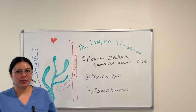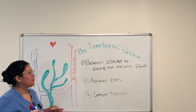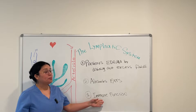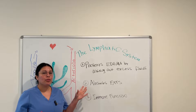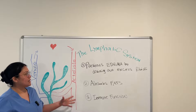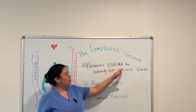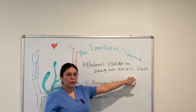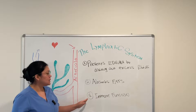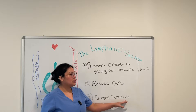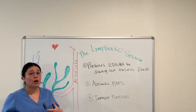Hey everyone, welcome. Today we're going to be reviewing the lymphatic system. Most people know the lymphatic system to be part of the immune system and have immune functions. However, there are three main functions: the first is it prevents edema by draining out excess fluids; the second is it absorbs fats in your small intestines; and the third is immune function because it has white blood cells present that filter out pathogens.